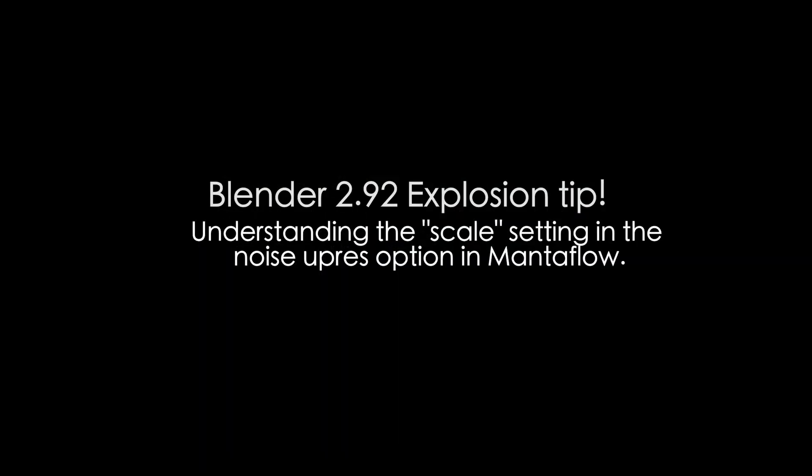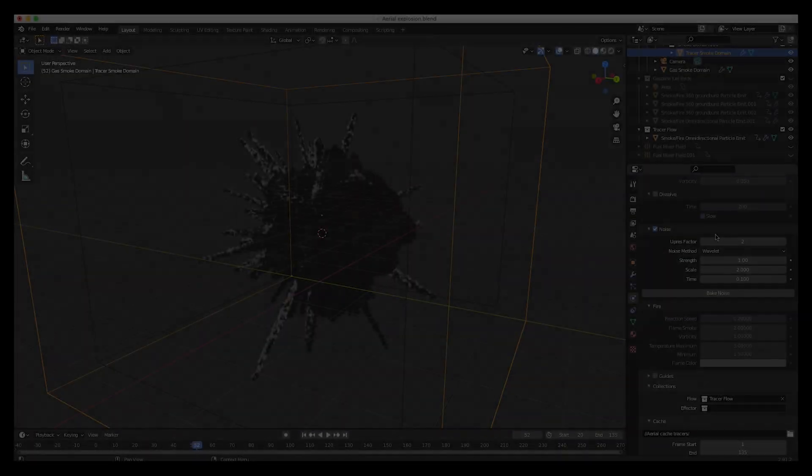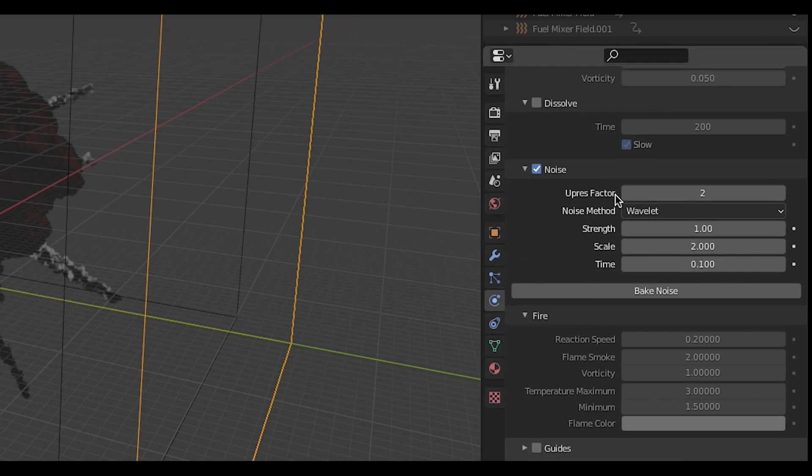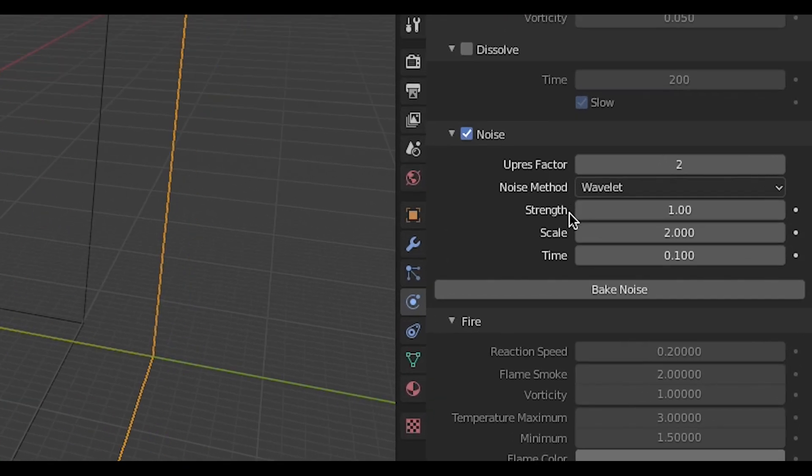So when up-resing your original simulation base meshes within Mantaflow, there are a variety of settings you can adjust, as you have probably seen in our previous videos. These settings include the up-res factor, the strength of the noise, the scale of the noise, and the timing of the noise.